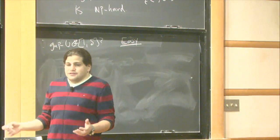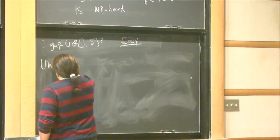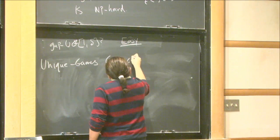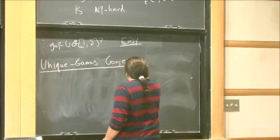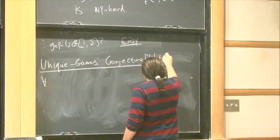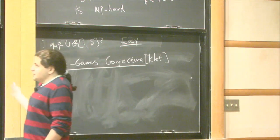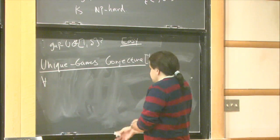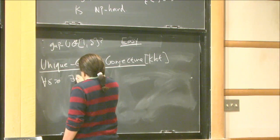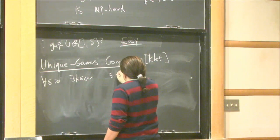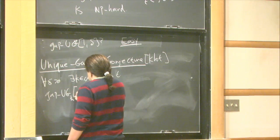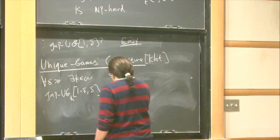The Unique Games Conjecture states that the next best thing happens. It says that for every delta > 0, there is some alphabet size K such that gap unique games on alphabet size K between 1 − delta and delta is NP-hard.